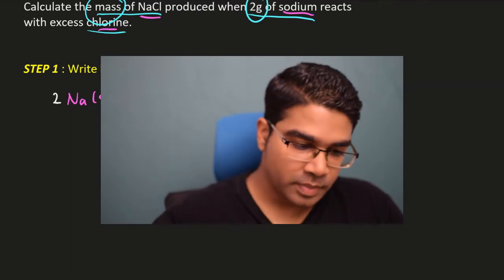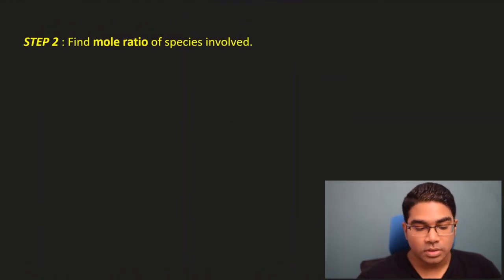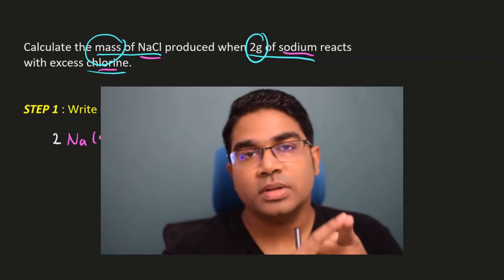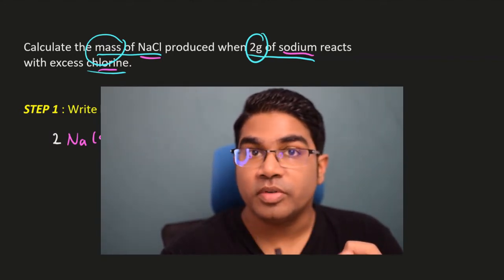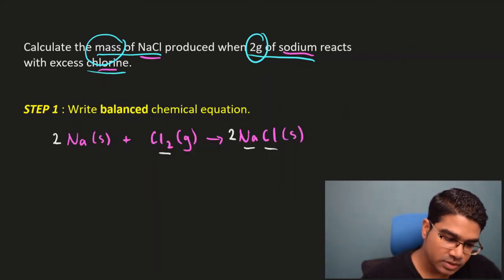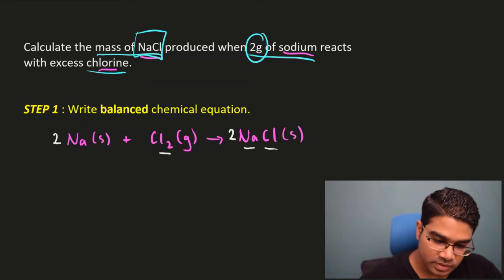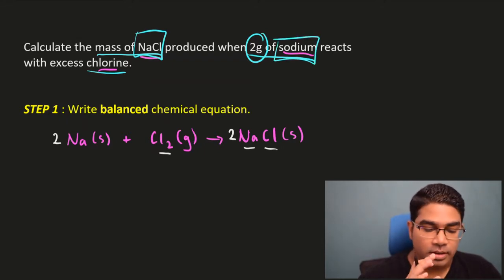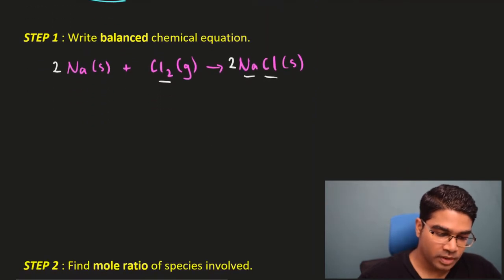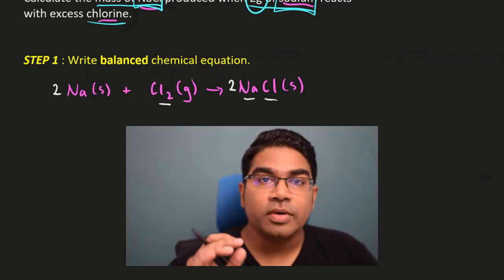Now this is important for the next step. Once we have our balanced chemical equation, step two is to find the mole ratio of the species involved. In the question, you always have two things: one species with a given quantity — here, two grams of sodium — and one you need to find, which is the mass of sodium chloride. So the species involved are sodium and sodium chloride.